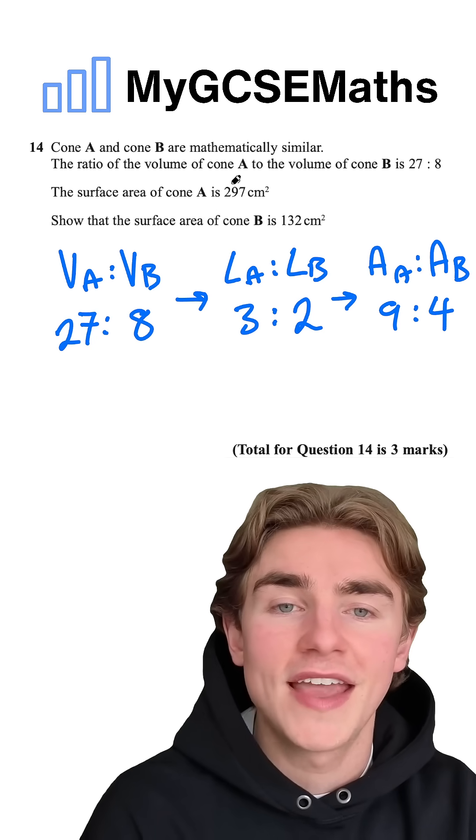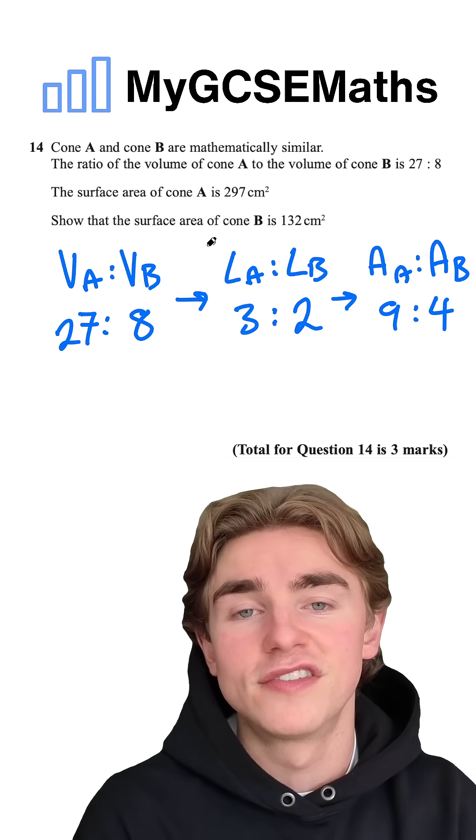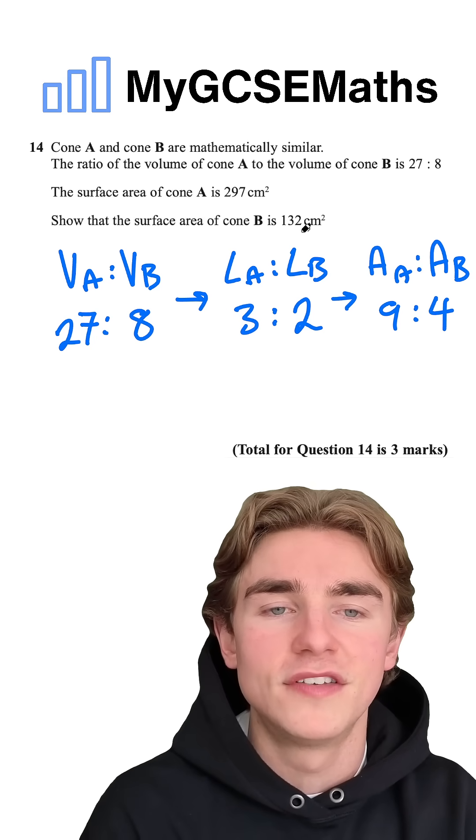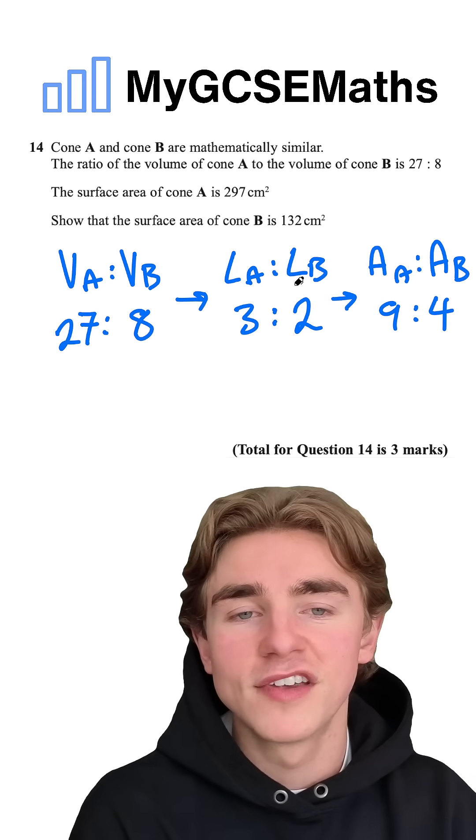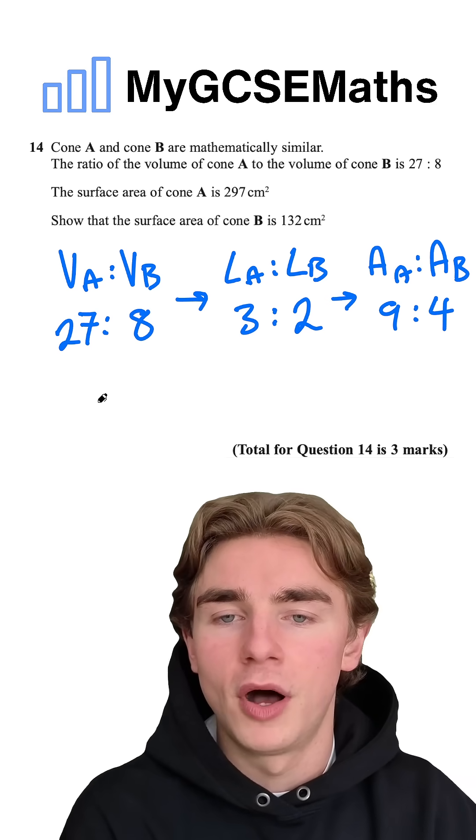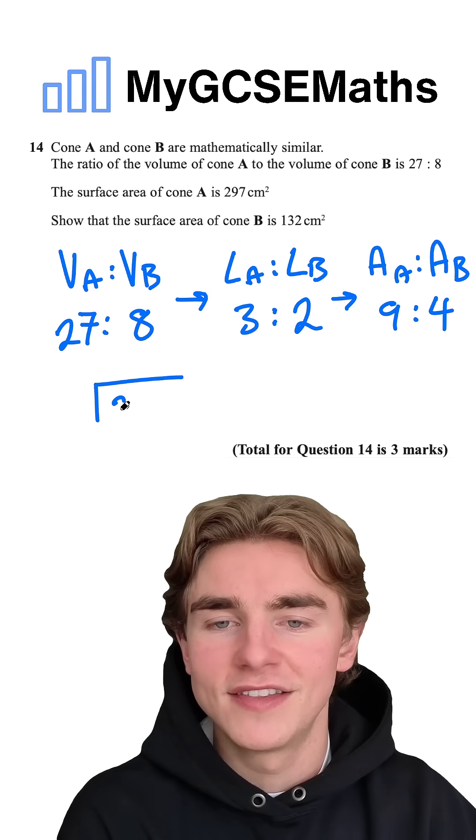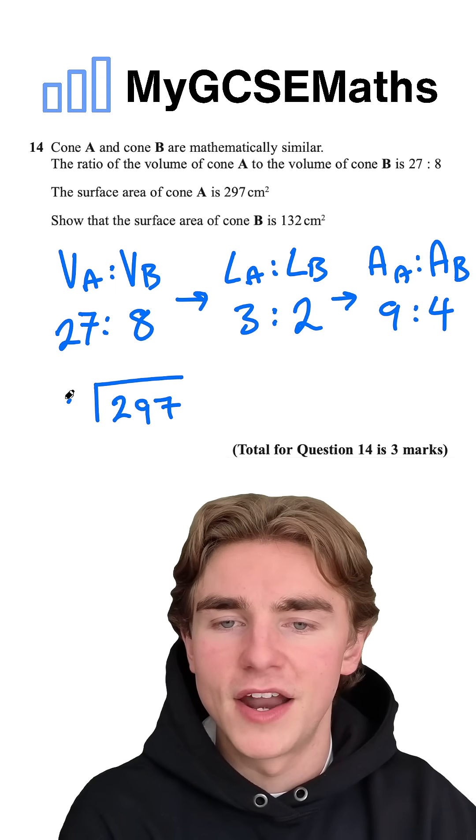Next step, we're told that the surface area of cone A is 297. We need to show that the surface area of B is 132. If 9 parts of our ratio is 297, how can we work out 4 parts? We can start by working out 1 part. So we're going to do 297 divided by 9.